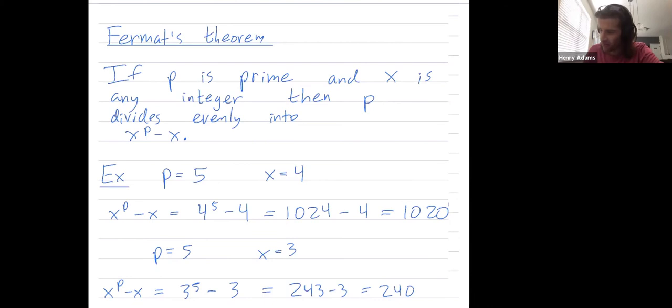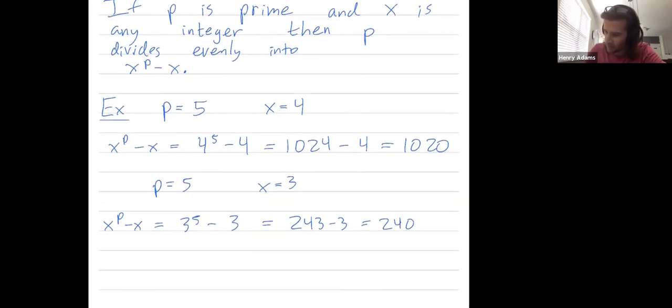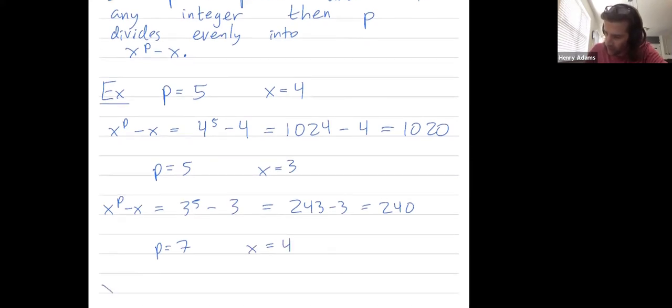And this works for any prime. So let's do maybe P equals 7 and X equals 4. So as our final example, X to the Pth power minus X is 4 to the 7th power minus 4,